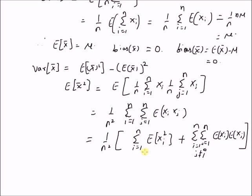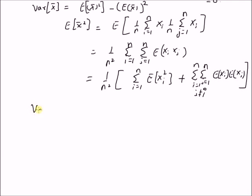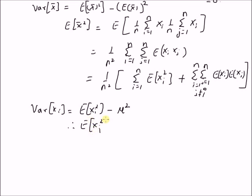So the double summation becomes the sum of two parts: the first is a single summation where j equals i giving expectation of X_i squared, and for j not equal to i we have the double summation of the product of expectations due to independence. By definition, variance of X_i equals expectation of X_i squared minus mu squared. Therefore, expectation of X_i squared is equal to mu squared plus sigma squared.